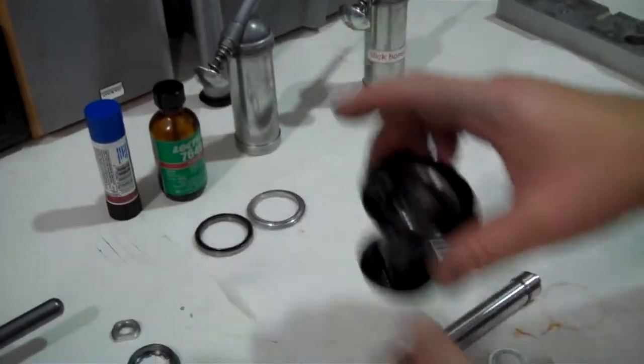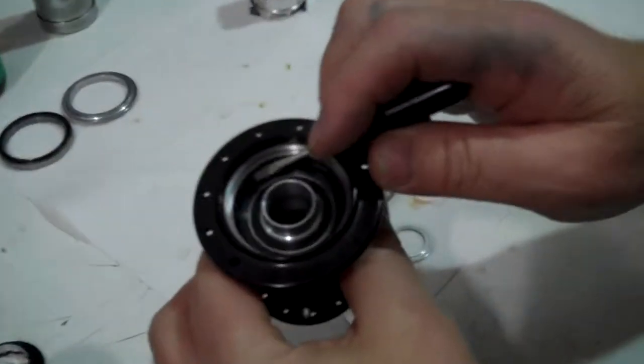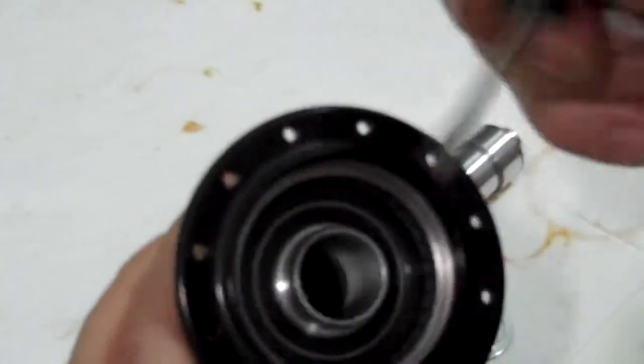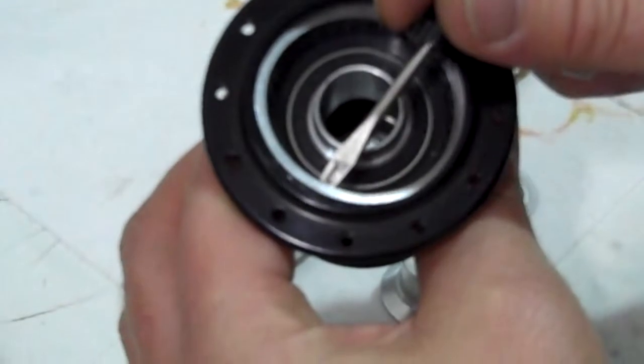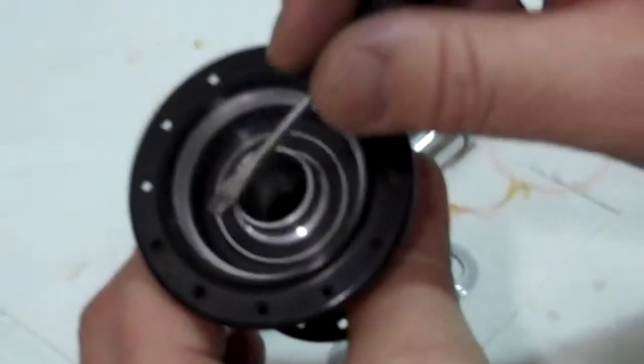So we've got the shell here. First thing you need to notice is that on top of the driver gear there is a thin spacer there, a thin silver spacer. You need to make sure that that's in place. If that came out anytime during the cleaning process, make sure that you put it back in place so it's there.